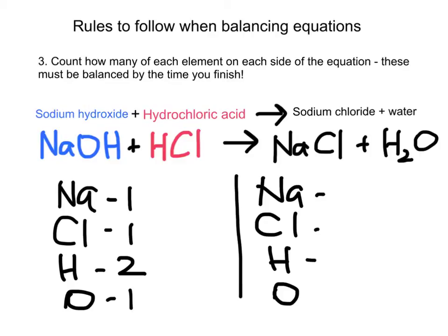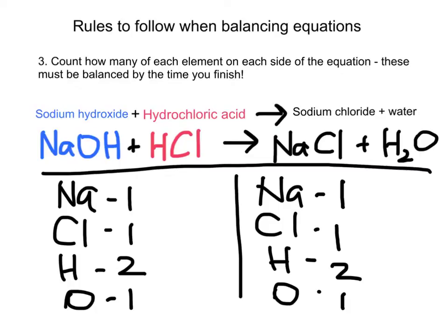On the right side: sodium — one; chloride — one; hydrogen — two within the water; oxygen — one. Going through the list: one to one, one to one, two to two, one to one. This is one of those lovely equations that actually balances itself and you do not need to do anything further — this is your final balanced equation. It was a good starting place to show the general idea.